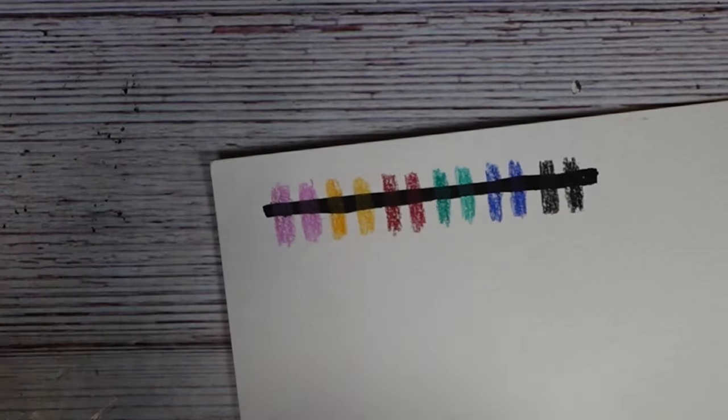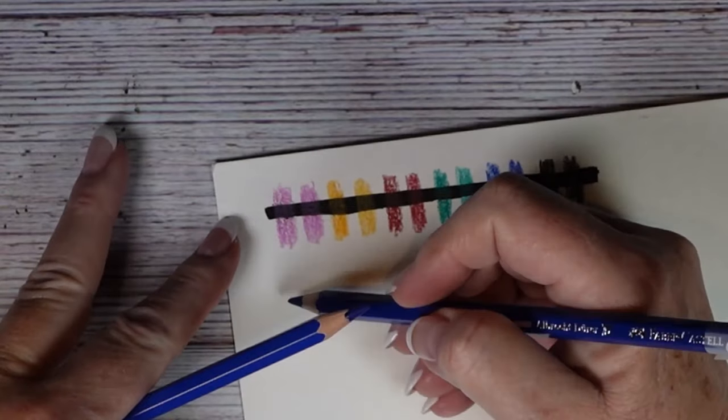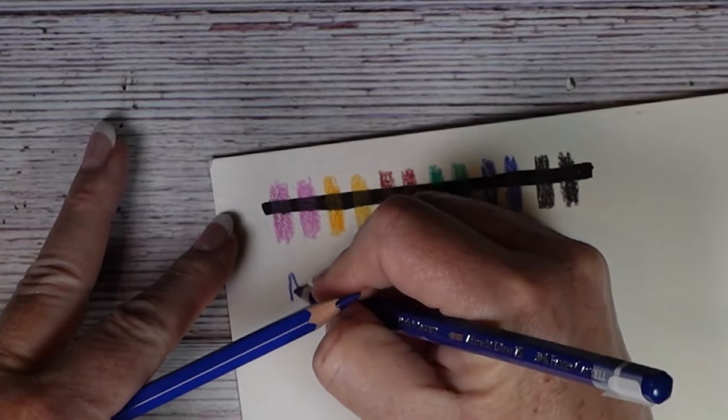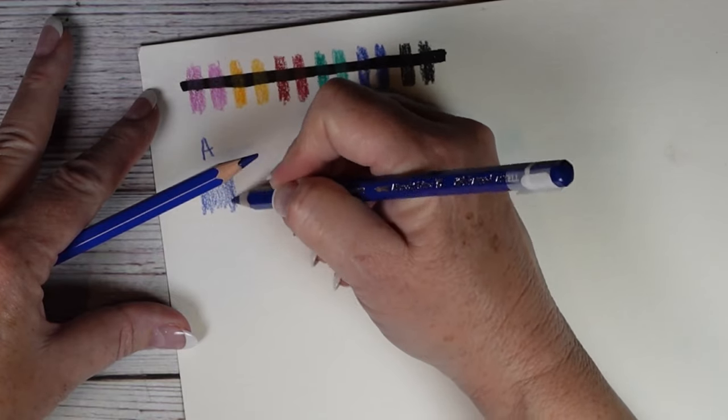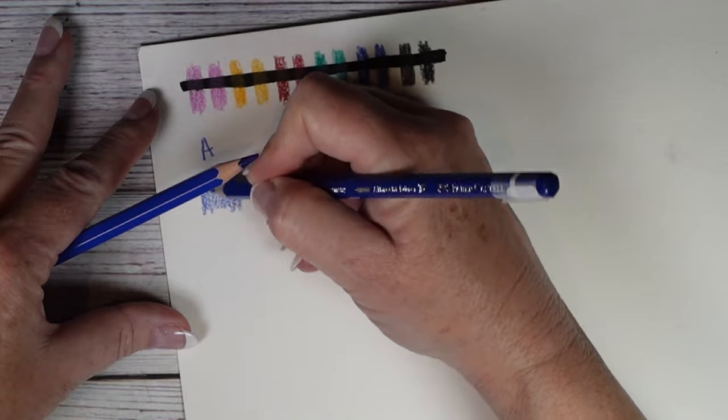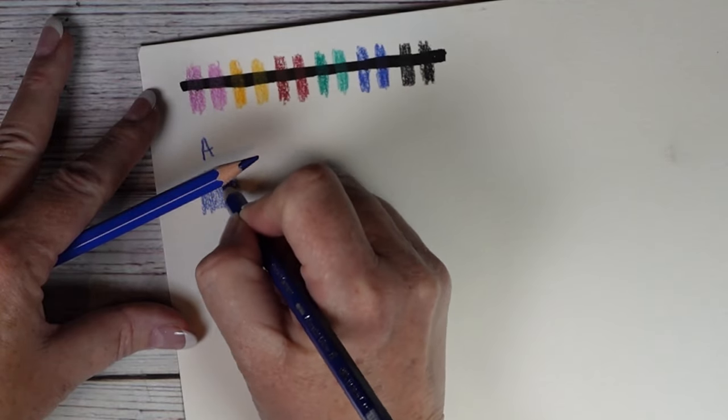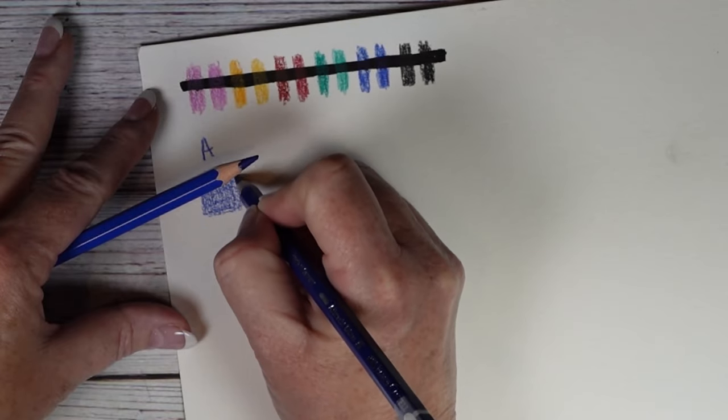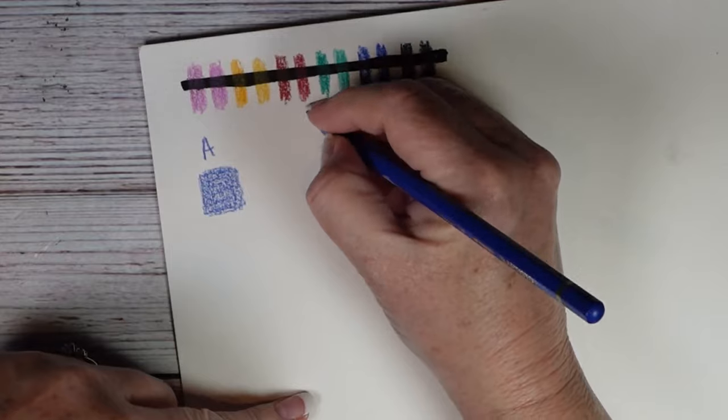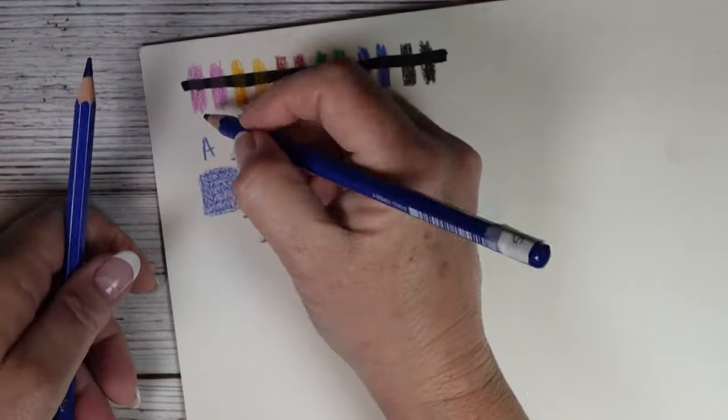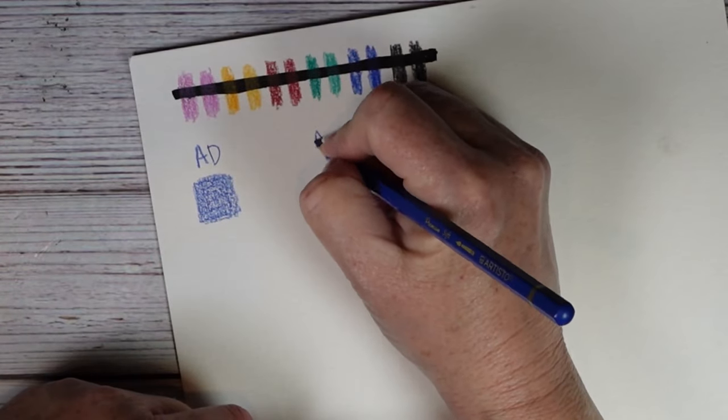So now what I am going to do is I am going to lay down. This will be the Albrecht Durer. And I am just pressing lightly. I am going to go over my little square. I guess they both start with A. Albrecht Durer and this will be Artisto.